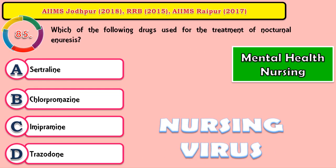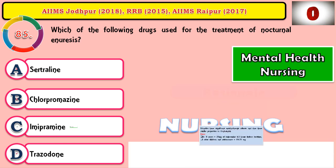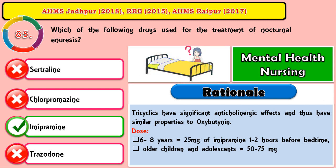Question 85: Which of the following drugs is used for the treatment of nocturnal enuresis? The correct answer is imipramine. The tricyclic antidepressants have significant anticholinergic properties, similar to oxybutynin. The dosage of imipramine for older children can be 50 to 75 mg.